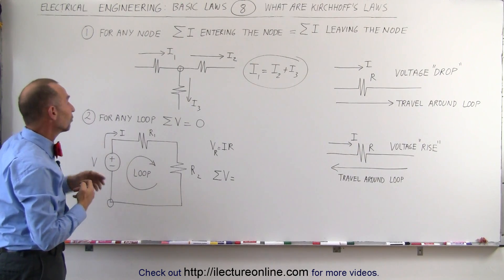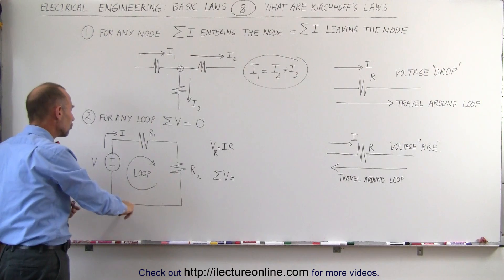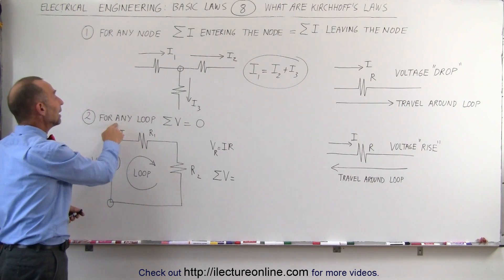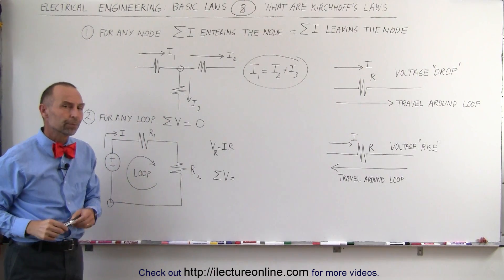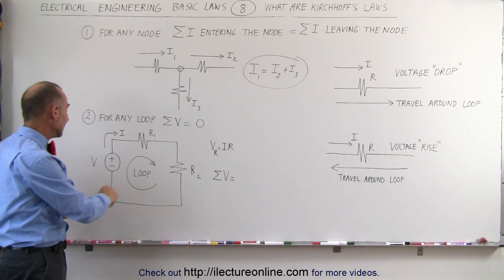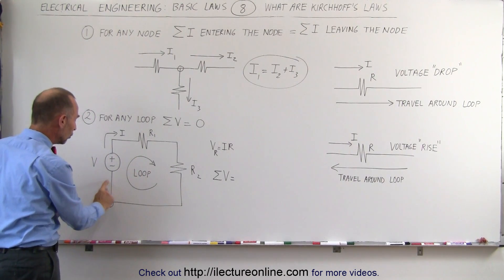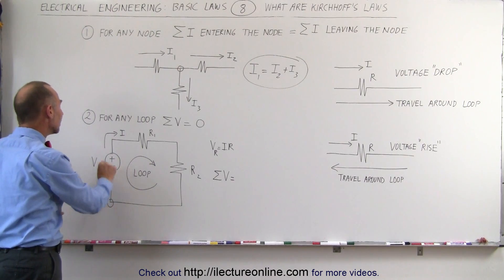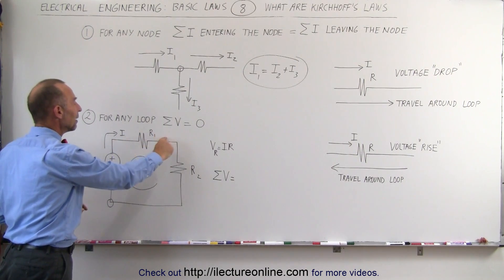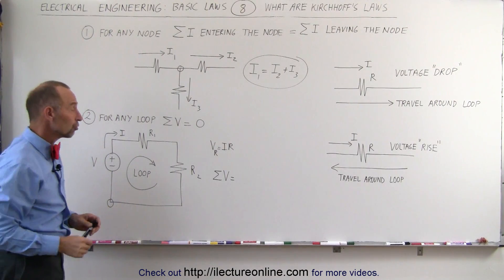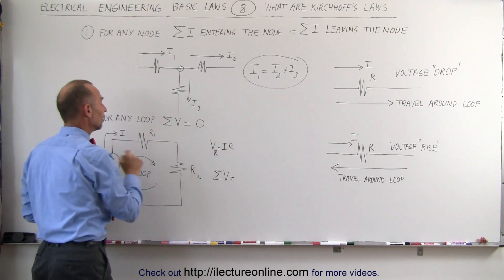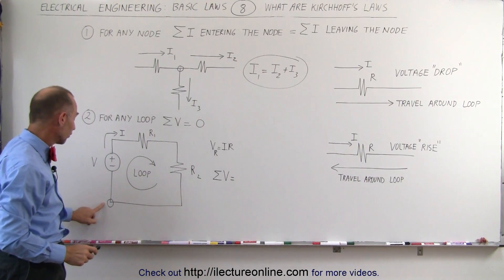The second rule has to do with voltages. Kirchhoff said that if you travel around any closed loop from any starting point ending at the same starting point, all the voltages added together must add up to zero. When we say all the voltages added together, that means all the voltage rises and all the voltage drops. In this case, since we're traveling with the current, let's say we start from this node, cross the battery from the negative end to the positive end — we then sum up this voltage. We have a positive voltage traveling from the negative end to the positive end. We then travel across this resistor — that would be a voltage drop. Remember, the voltage across any resistor equals the current in the circuit, in this case I, times the size of the resistor, in this case R1 and R2.